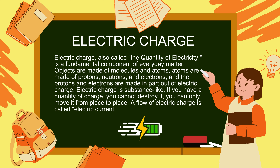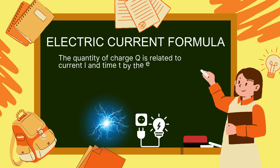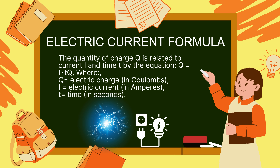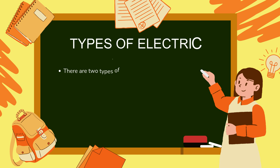Electric current formula: the quantity of charge Q is related to current I and time T by the equation Q = I × T, where Q is electric charge in coulombs, I is electric current in amperes, and T is time in seconds.